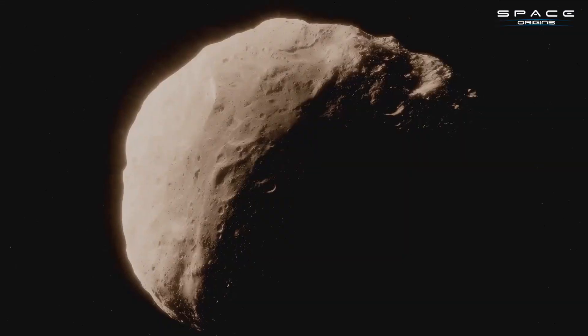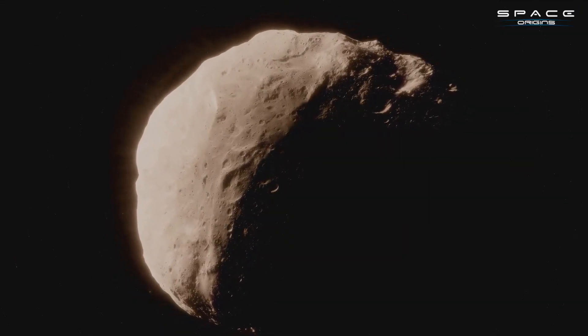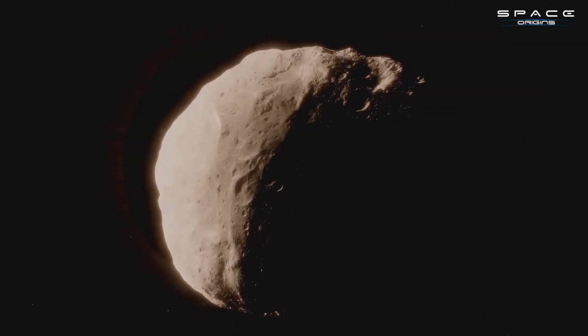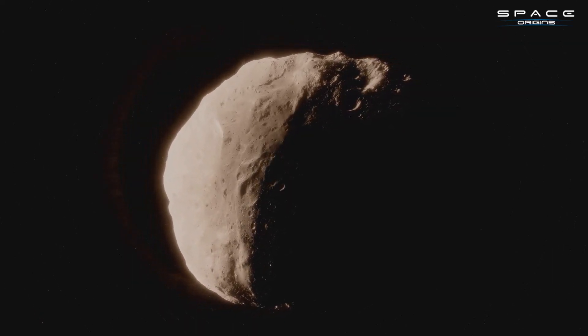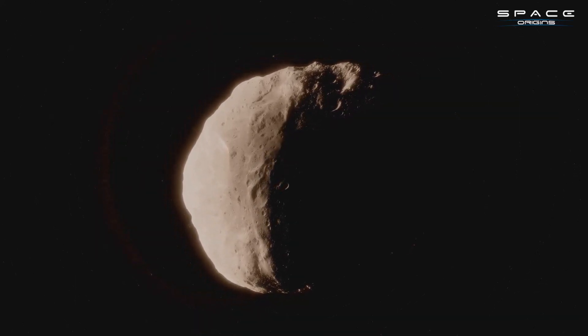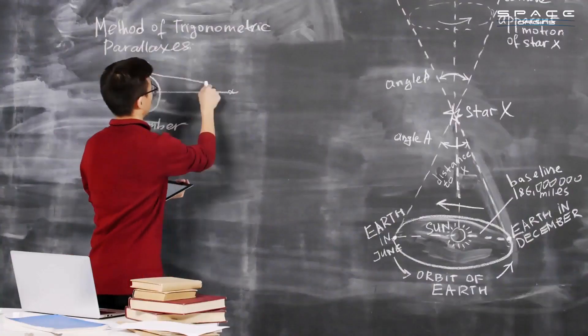Amongst these are the Atens, asteroids with orbits close to Earth's, which remain almost perpetually invisible due to their position in the sunlit sky. These undetected asteroids present an increased risk of impact, a risk we cannot afford to overlook.